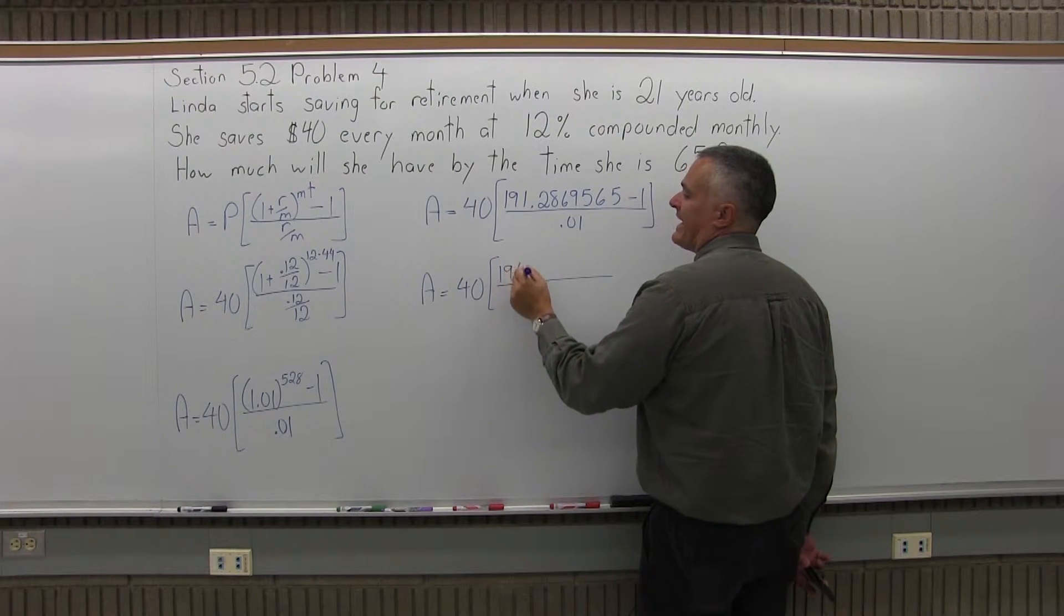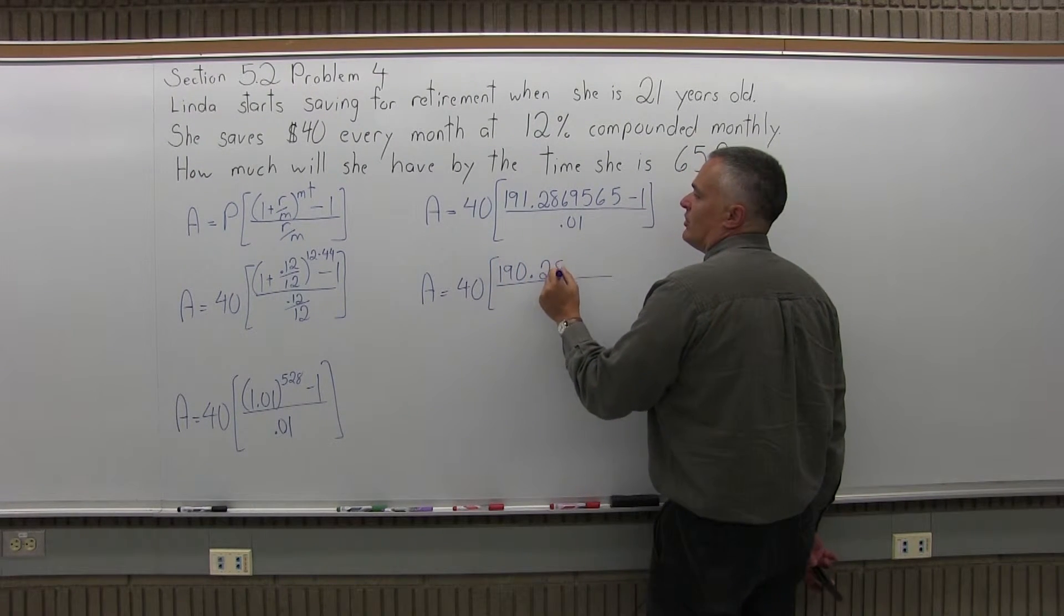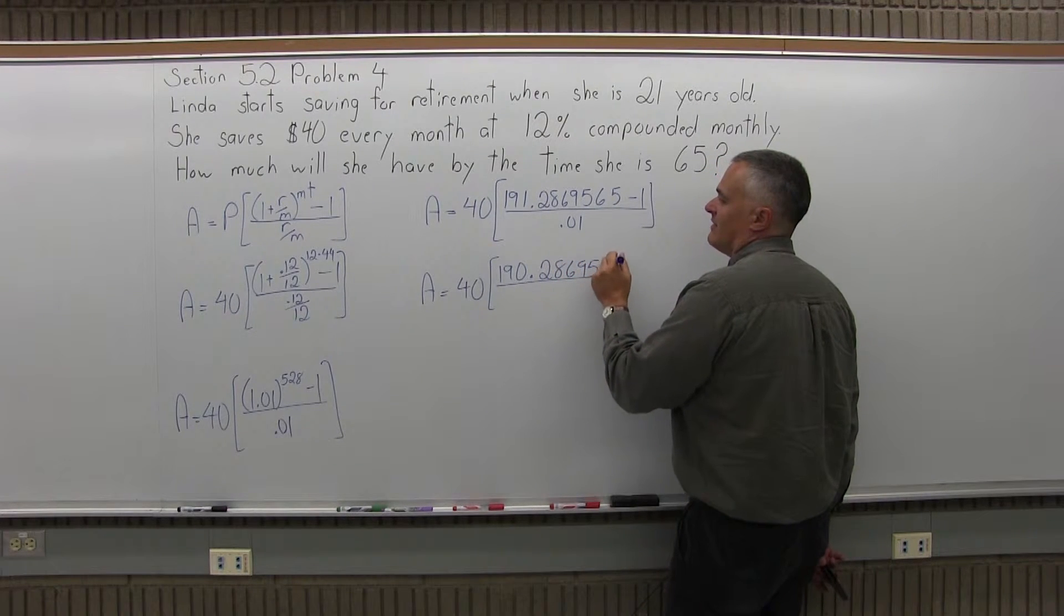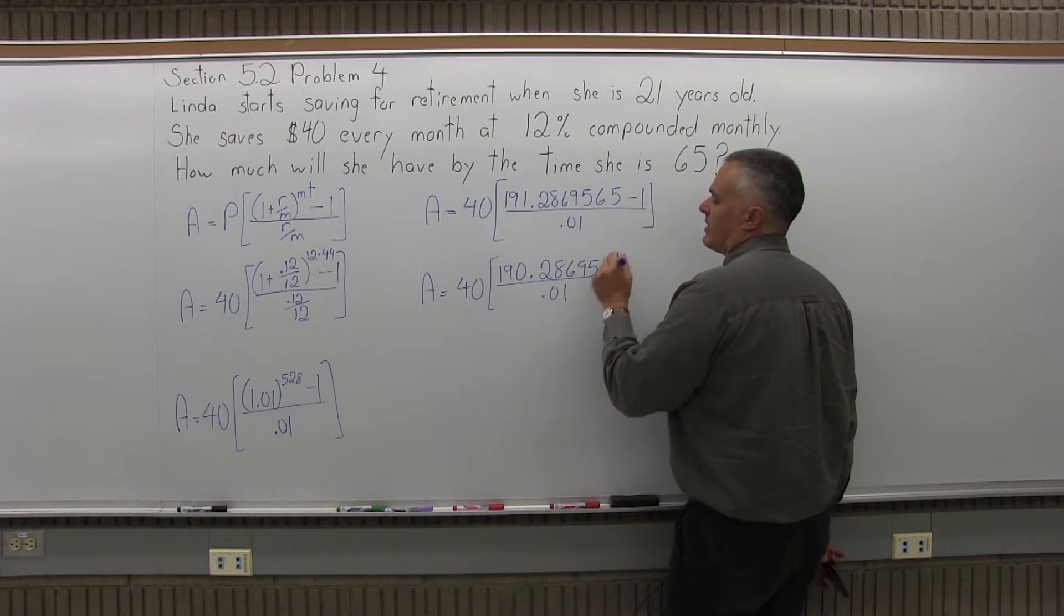So the next part of the process, I'm going to have 40 times some brackets, and the top of the brackets, 190.2869565. And I will divide that by 0.01.